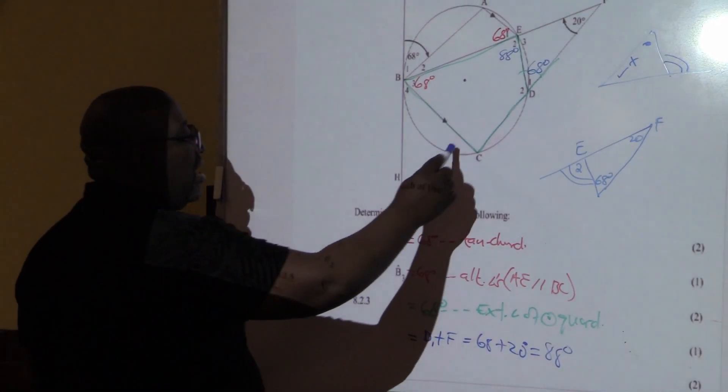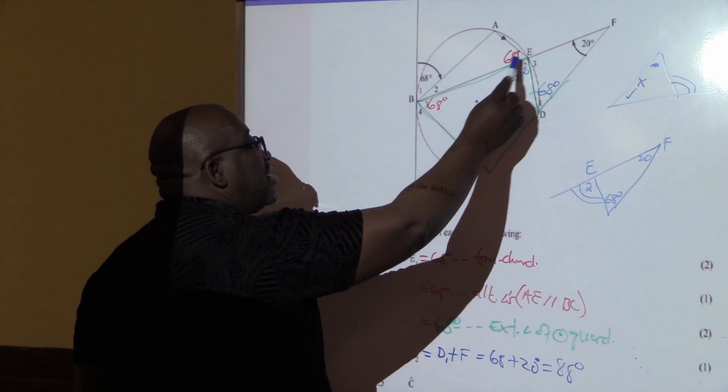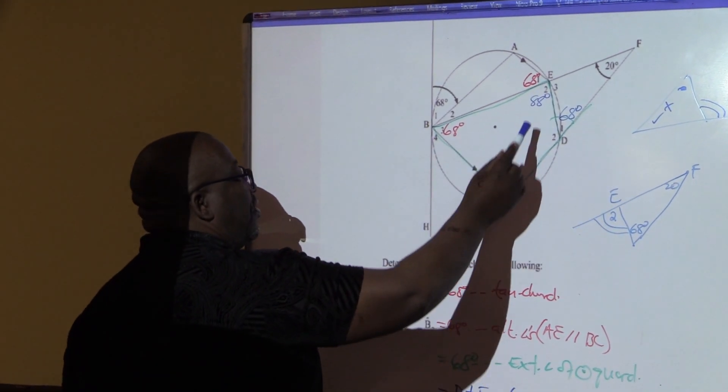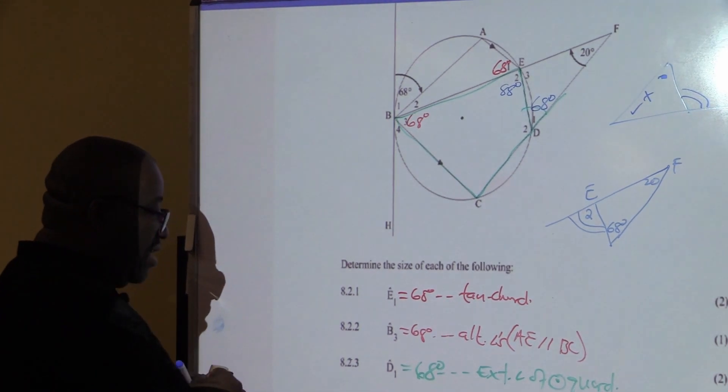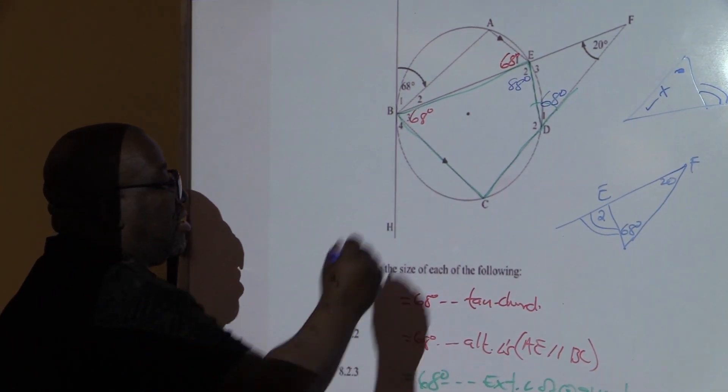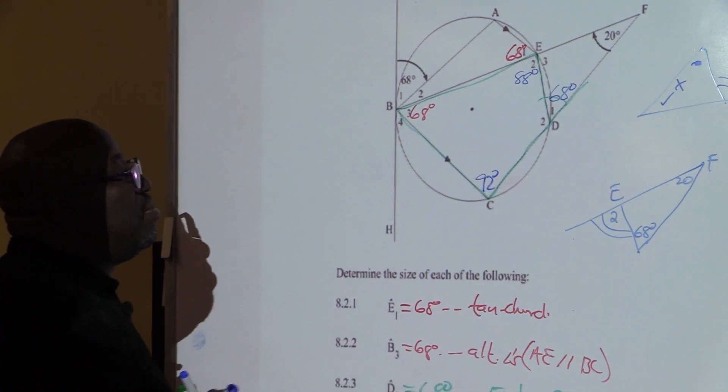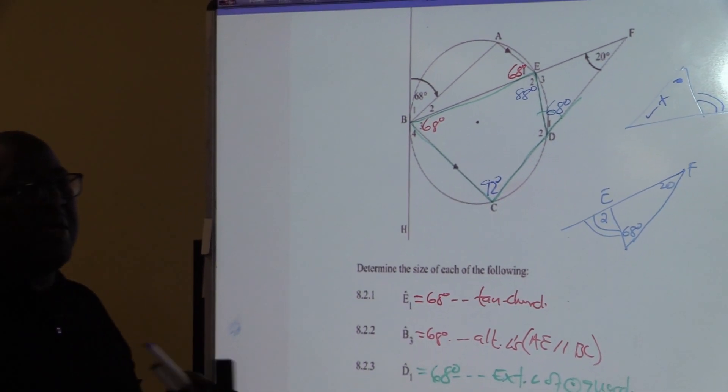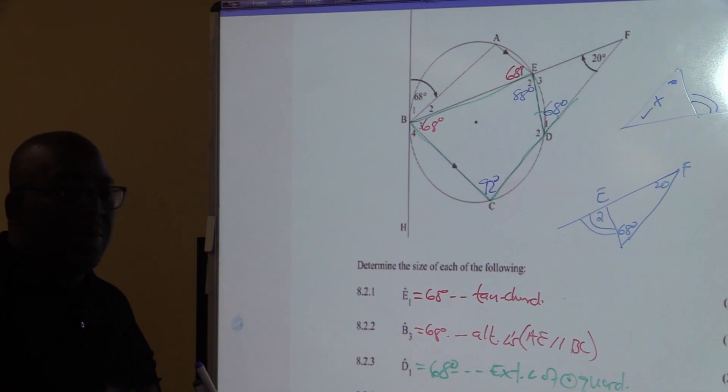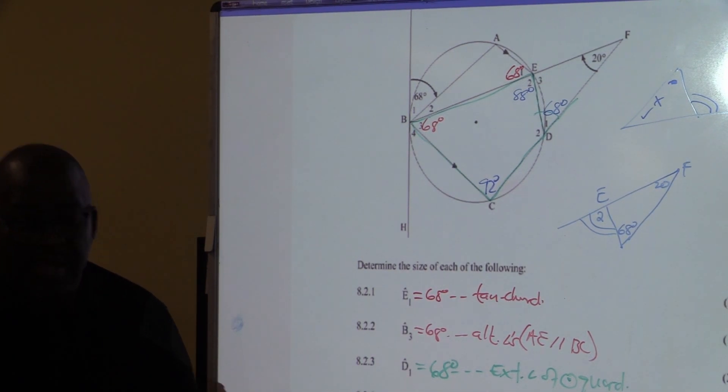We are looking for angle, the value of this angle, angle C. We know that this is a cyclic quadrilateral. So this angle plus this angle must give us 180 degrees. So it makes this angle C to be 92 degrees. So that's important. That you must be able to solve this. It's all about theorems. Nothing else. I want us to look at the next problem. Thank you.